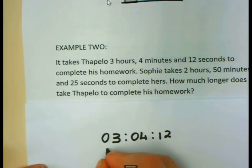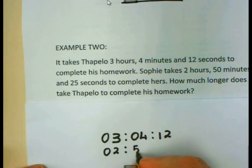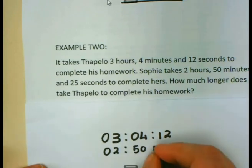Now I can write the shorter time right below it. Sophie takes 2 hours, which I can write as 2, 50 minutes. Can you see why was it important to write 04? Because my 50 is having 2 digits, it is now just better to see that the 4 is smaller than the 50. And then finally, 25 seconds.